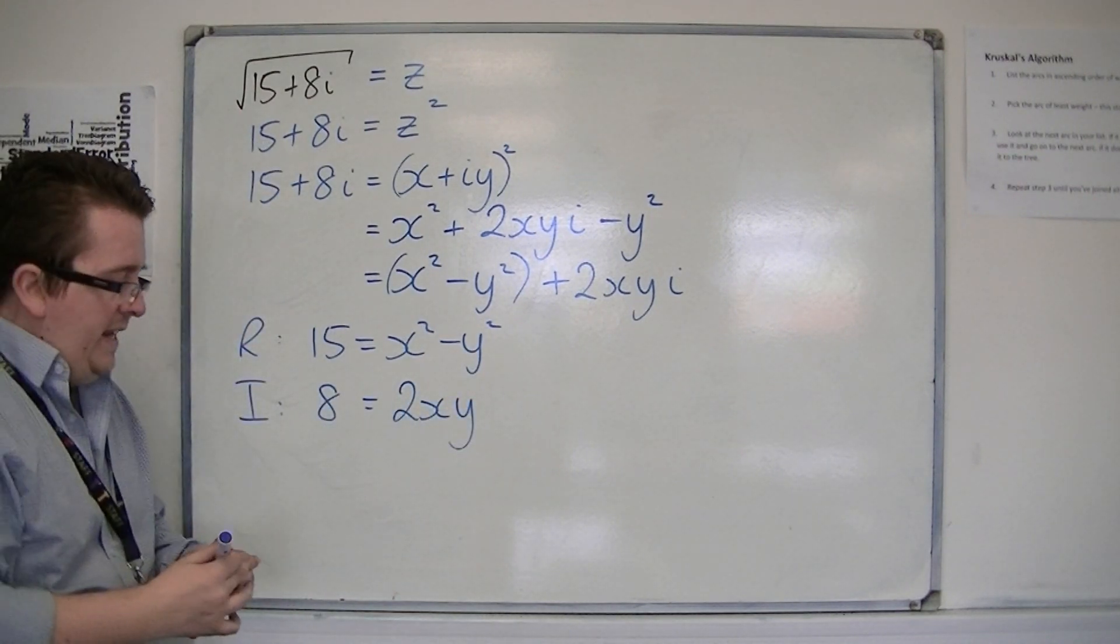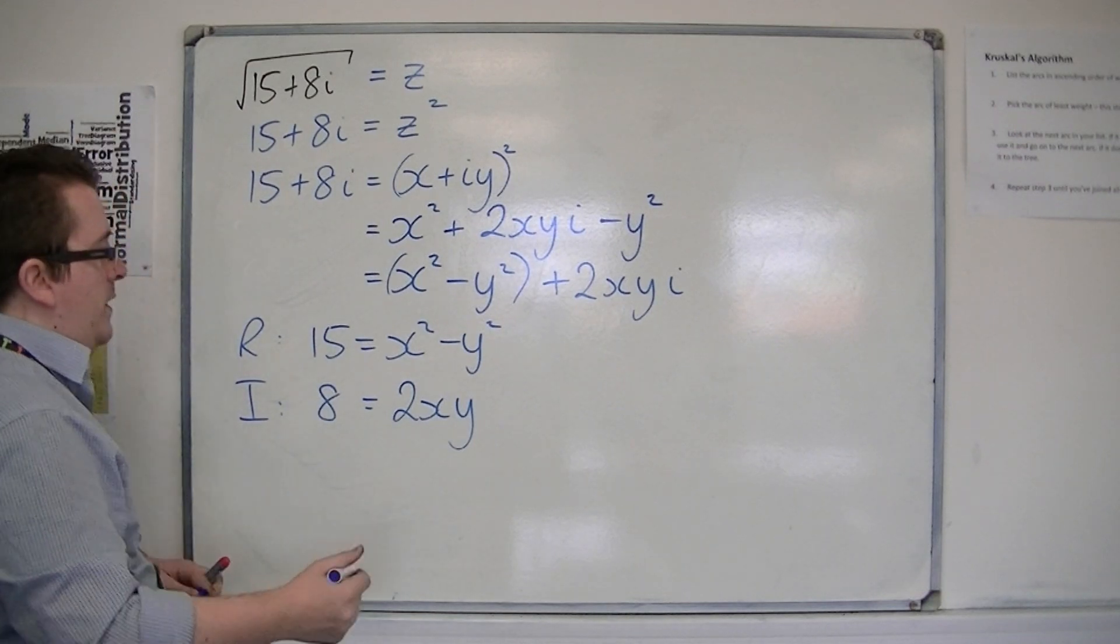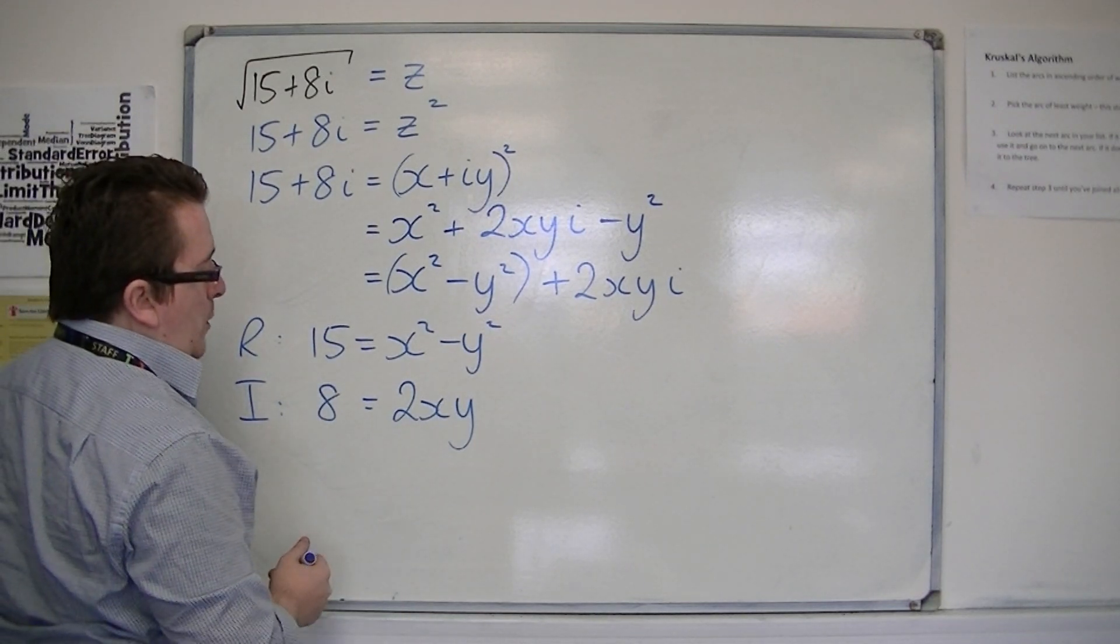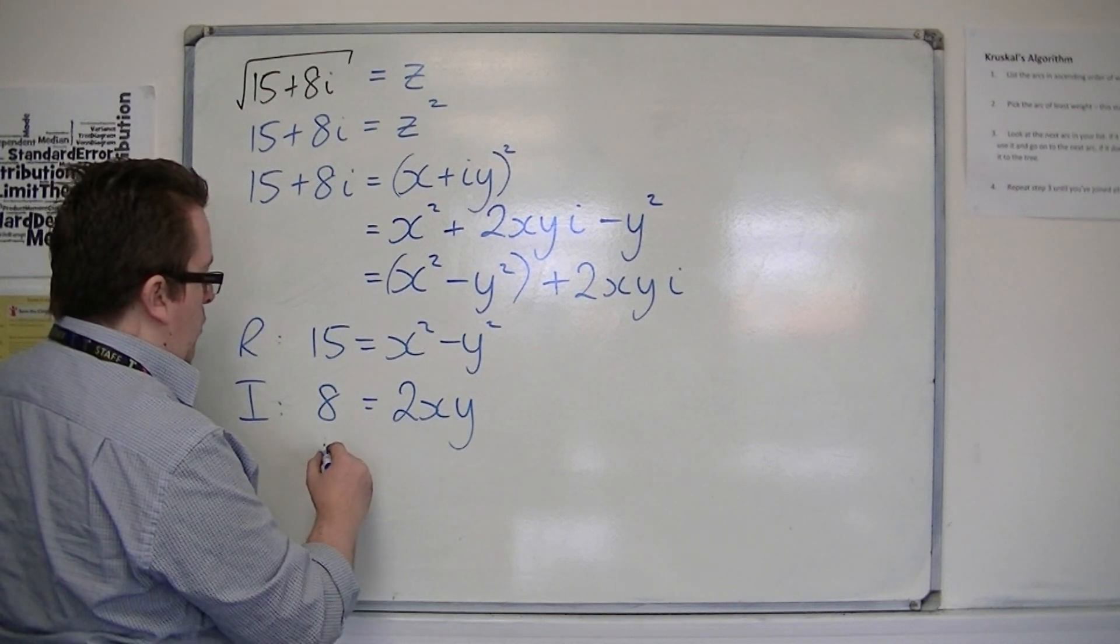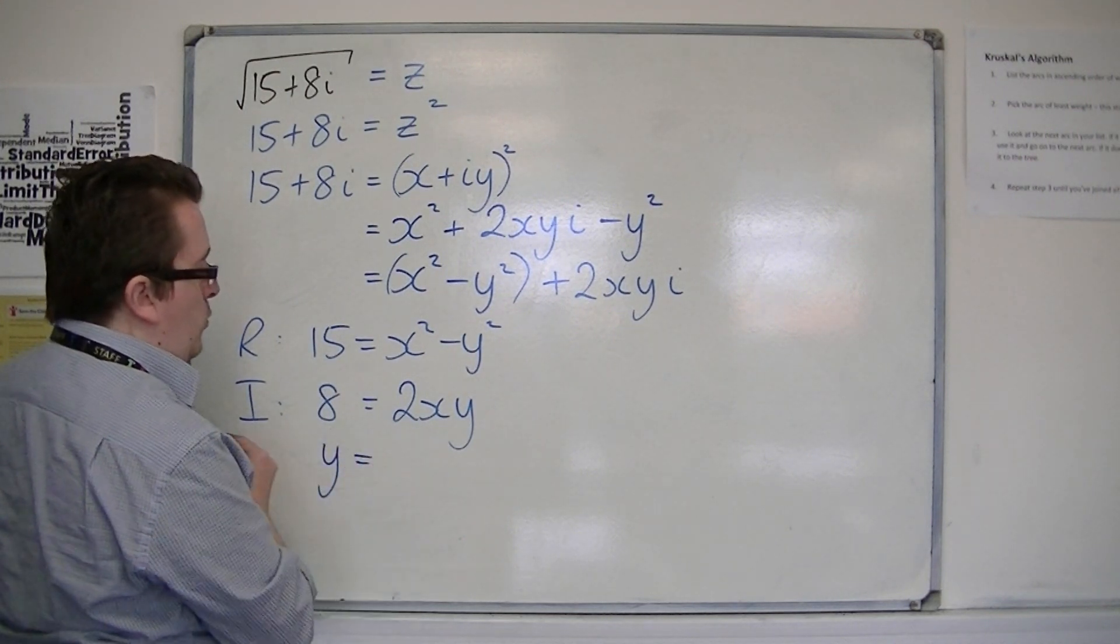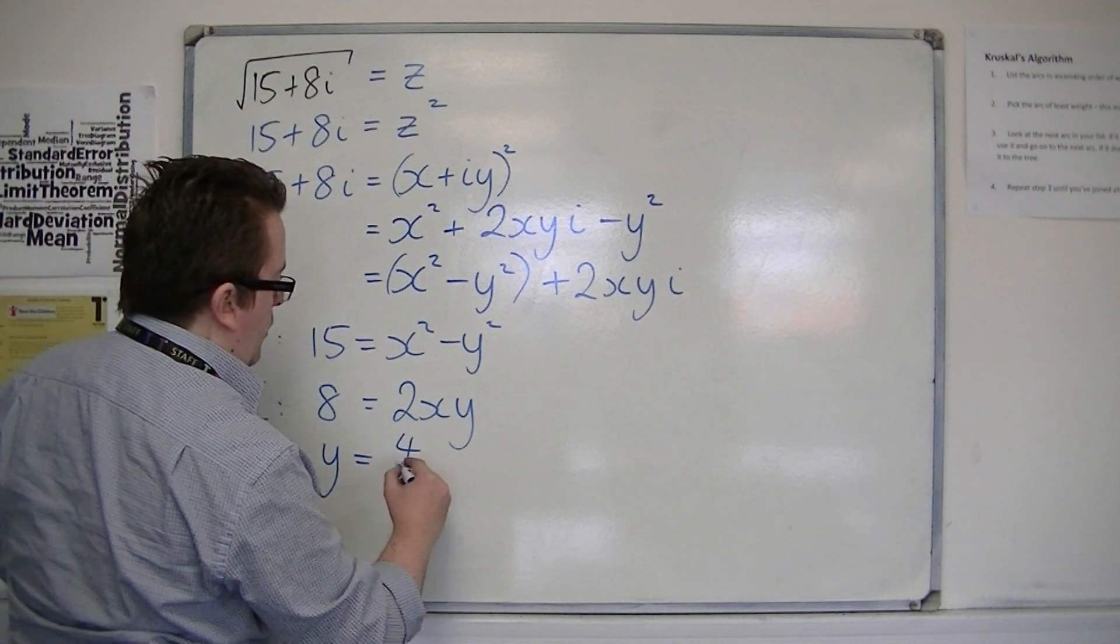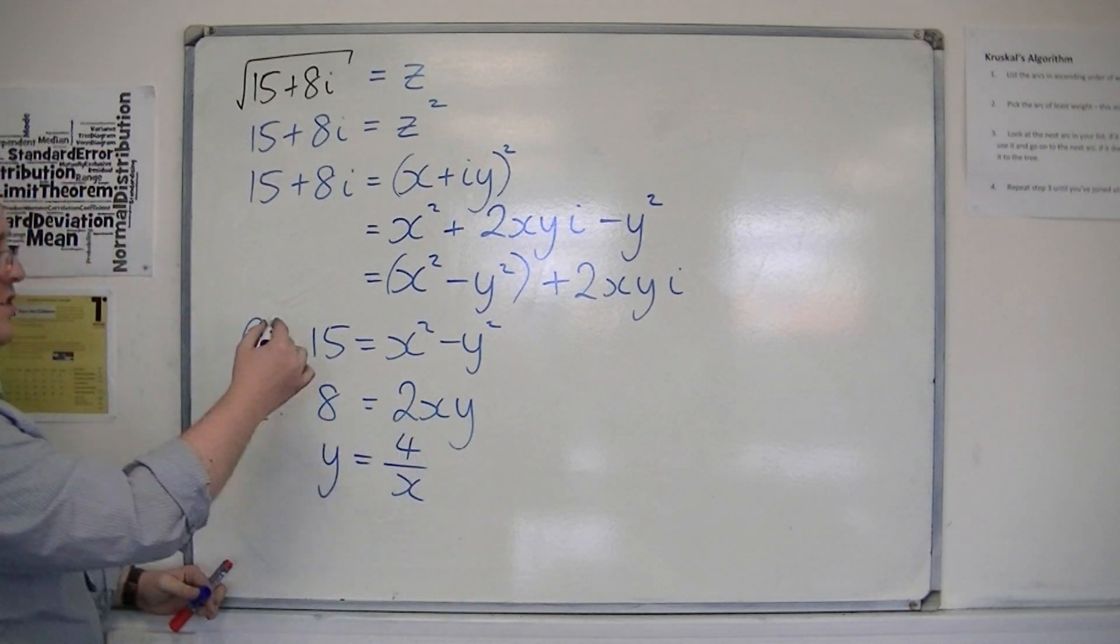So if I take this second equation, divide through by 2, and divide through by x, I'm going to get y is equal to 4 over x.